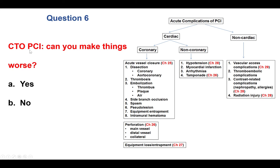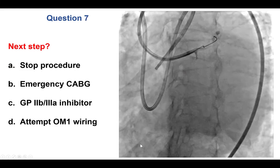The next question is whether you can make things worse with CTO-PCI — and as this case illustrates, absolutely yes. This is an example of acute vessel closure due to dissection compromising one of the non-CTO branches and causing hemodynamic compromise requiring hemodynamic support. Acute vessel closure is one of three major coronary complications, the other two being perforation and equipment loss and entrapment.